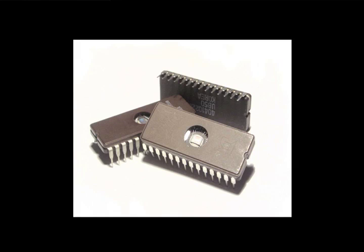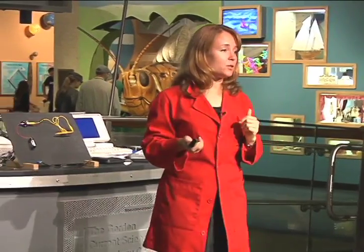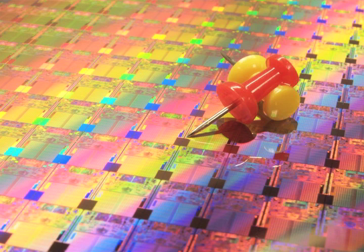We've gotten so good at shrinking our transistors that on our latest chips, we have as many as two billion transistors on a little square of silicon, which is pretty amazing that they're so small. Each one of these squares, which you can see is smaller than a thumbtack, is one of the microprocessors that runs your computer.